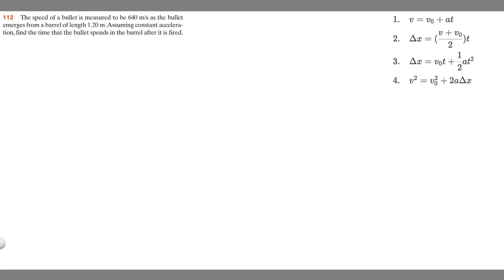In this problem we're told the speed of a bullet is measured to be 640 meters per second as the bullet emerges from the barrel length 1.2 meters. Assuming constant acceleration, find the time that the bullet spends in the barrel after it is fired.